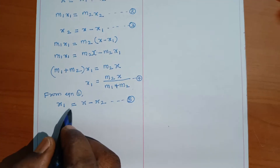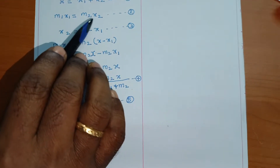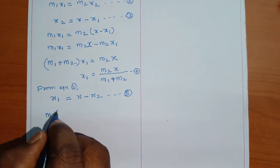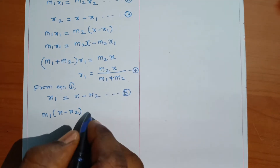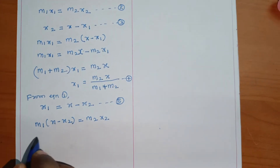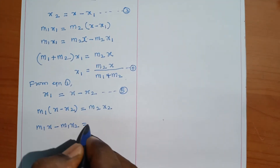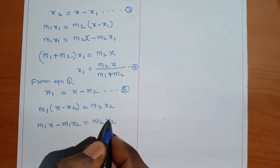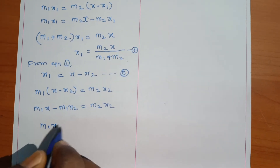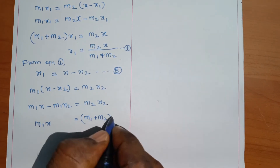Equation 5 is substituted into equation 2, which is the balance of equations: m1·x1 equals m2·x2. We substitute the x1 value. m1 into x minus x2 equals m2·x2. Expanding: m1·x minus m1·x2 equals m2·x2. Now x2 is common: m1·x equals m1 plus m2 into x2.